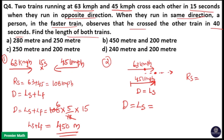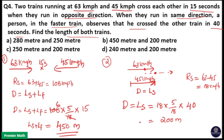The relative speed here, since both trains move in the same direction, is 63 minus 45 = 18 km/h, converted to meters per second: 18 × (5/18) = 5 m/s. Multiplied by time 40 seconds: 5 × 40 = 200 meters. So the length of the slower train is 200 meters, and the length of the faster train is 450 minus 200 = 250 meters. Option C is the answer: 250 meters and 200 meters are the lengths of the faster and slower trains respectively.